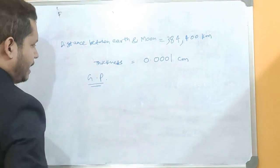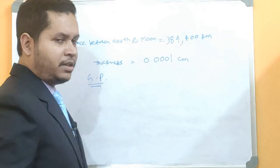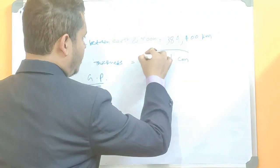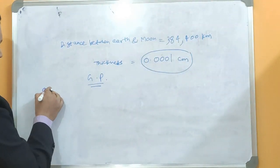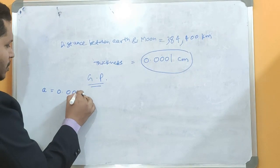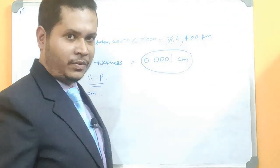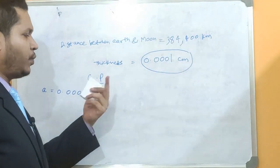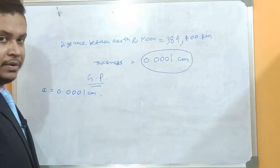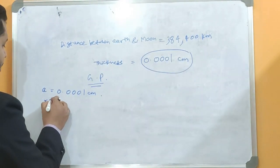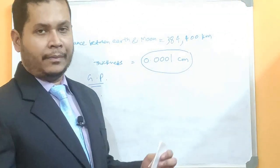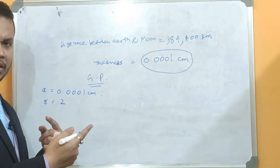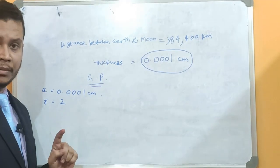Now according to GP. Right? Suppose if I take this thickness to be the term of a GP or a Geometric progression. So let us consider this to be my first term. Suppose this is my first term. So I am taking a as 0.0001 cm. Now if my next element is twice of it and then again the next element is twice of it, that means you all can understand that the common ratio is becoming 2. Because every time, every element is twice of the previous one. So that means there is a common ratio of 2 between any two consecutive terms. And that is what the concept of GP is all about. Right?